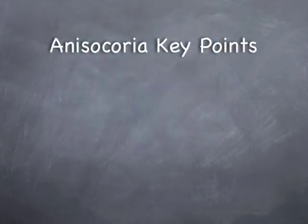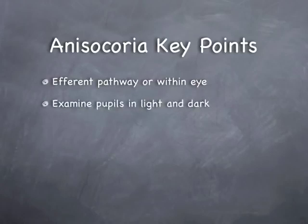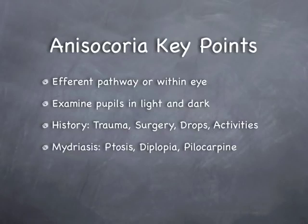Some key points once more. Anisocoria may arise due to a lesion impairing the efferent sympathetic or parasympathetic pathway to the eye or due to factors within the eye itself. The pupil should be examined in both light and dark with distance fixation. Ask about eye trauma or surgery, use of eye drops and gardening.